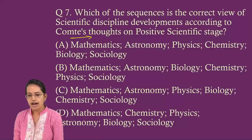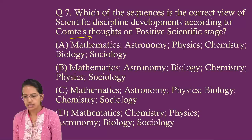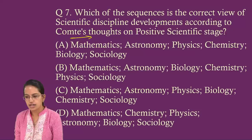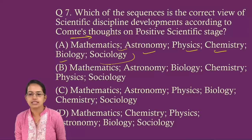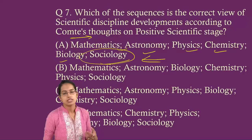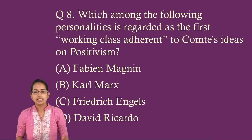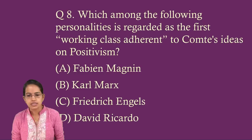The correct order from most scientific/objective to least is: mathematics, astronomy, physics, chemistry, biology, and lastly sociology. That is the order under which Comte's thoughts on the positive scientific stage were explained. Question 8: The personality regarded as the first working-class adherent to Comte's idea on positivism — a very direct question.